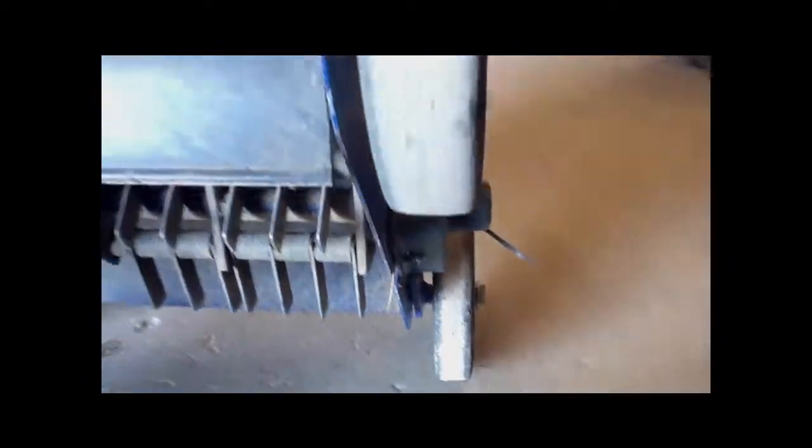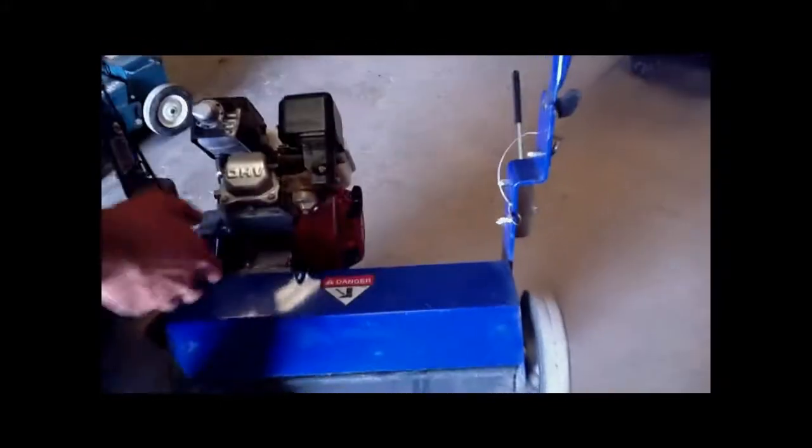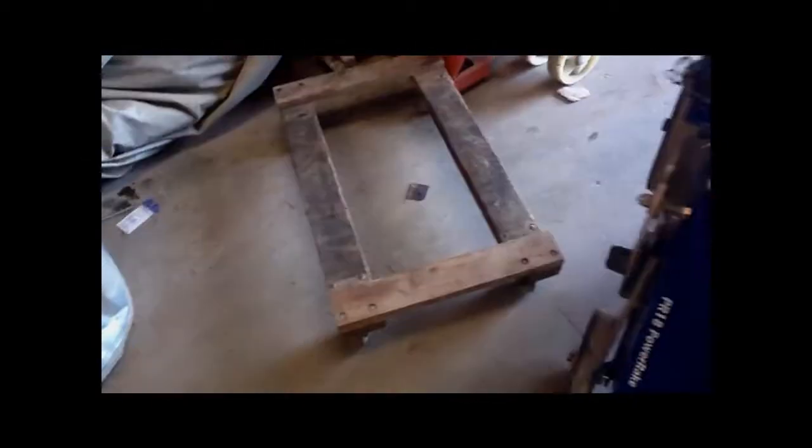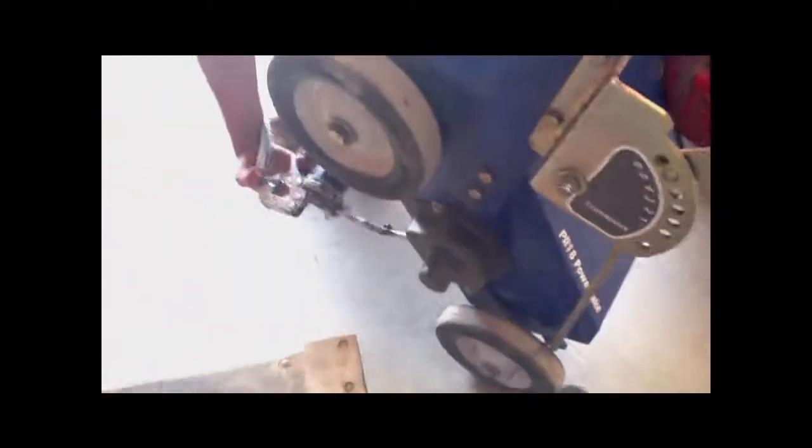On the outer bearings, that's generally where the grease fitting is going to be. This one on this machine just happens to be right up in this hole right here. It's kind of hidden. Let me grab a grease gun real quick. You're going to want to chalk one of them wheels with your foot. Bring this up.